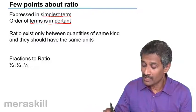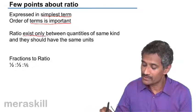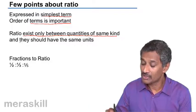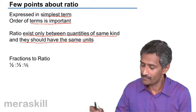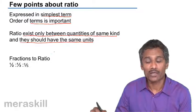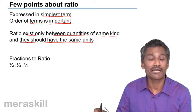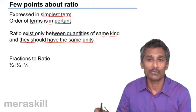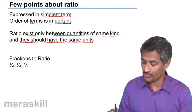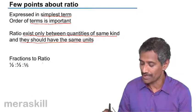Then one more important thing: ratio exists only between quantities of same kind and they should have the same units. Also, the final ratio has no particular unit. We can even have fractions as ratios.